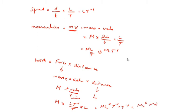What is velocity? Velocity is displacement by time. Displacement is the same as distance, so L by T, which is LT⁻¹.